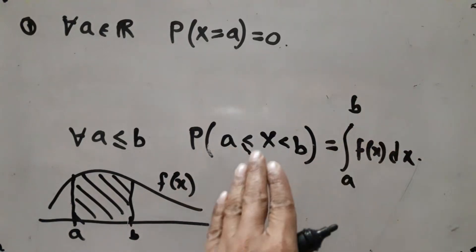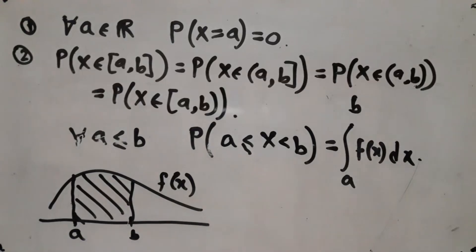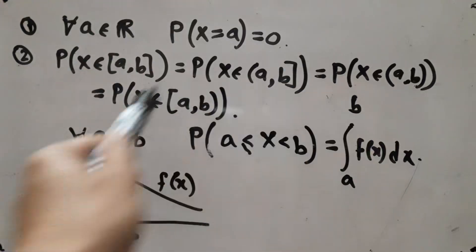Same argument holds even for this end, and you can mix and match even for this thing. So this gives you the probability that X lies in the interval a to b whether the interval is open, closed, or semi-open. This is our property number two.